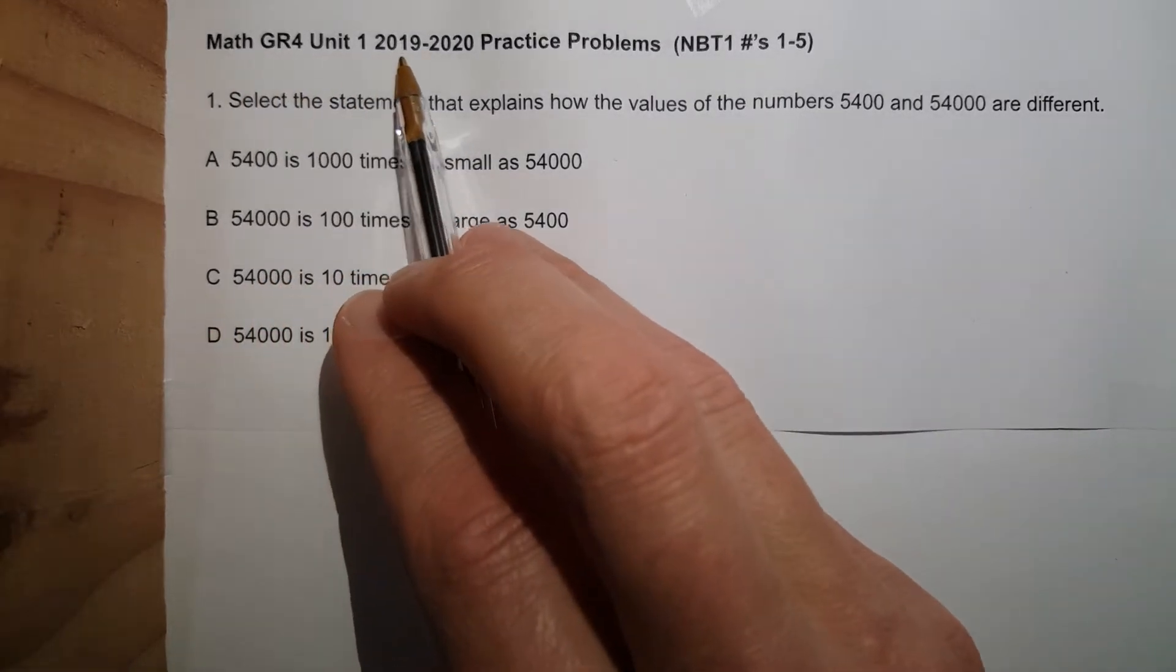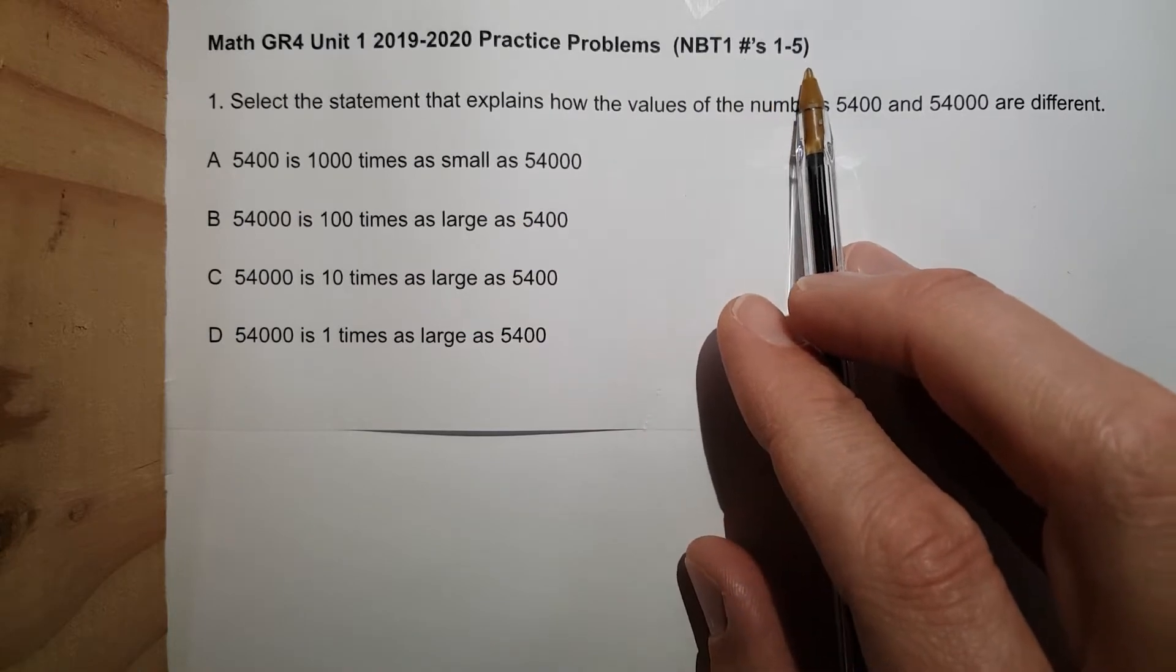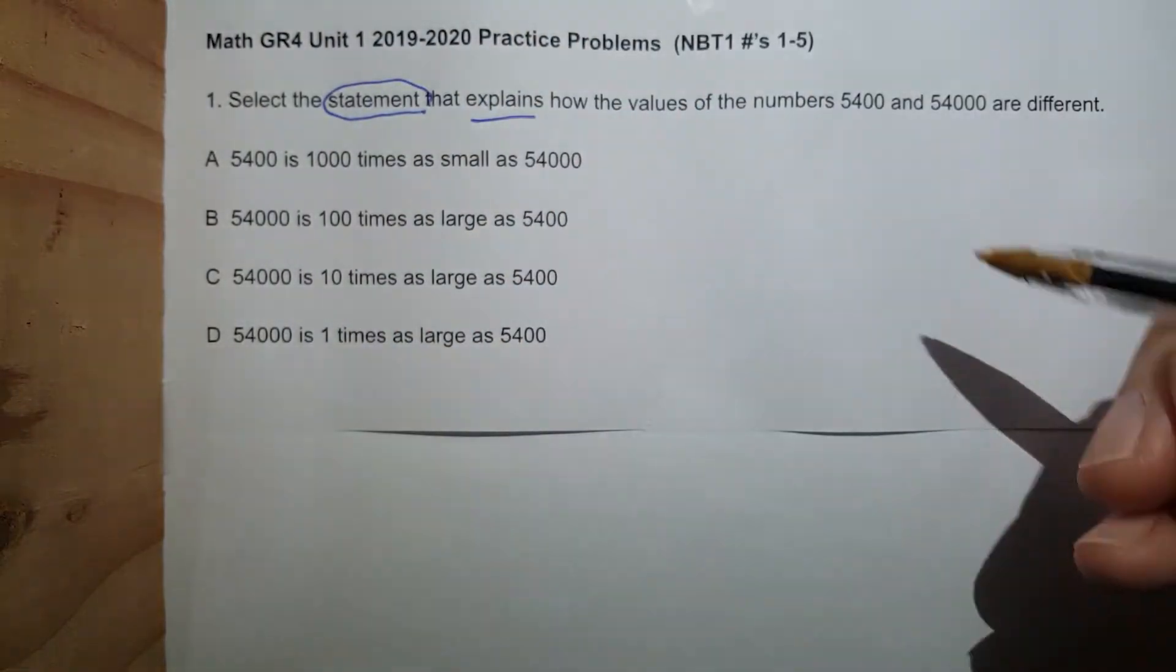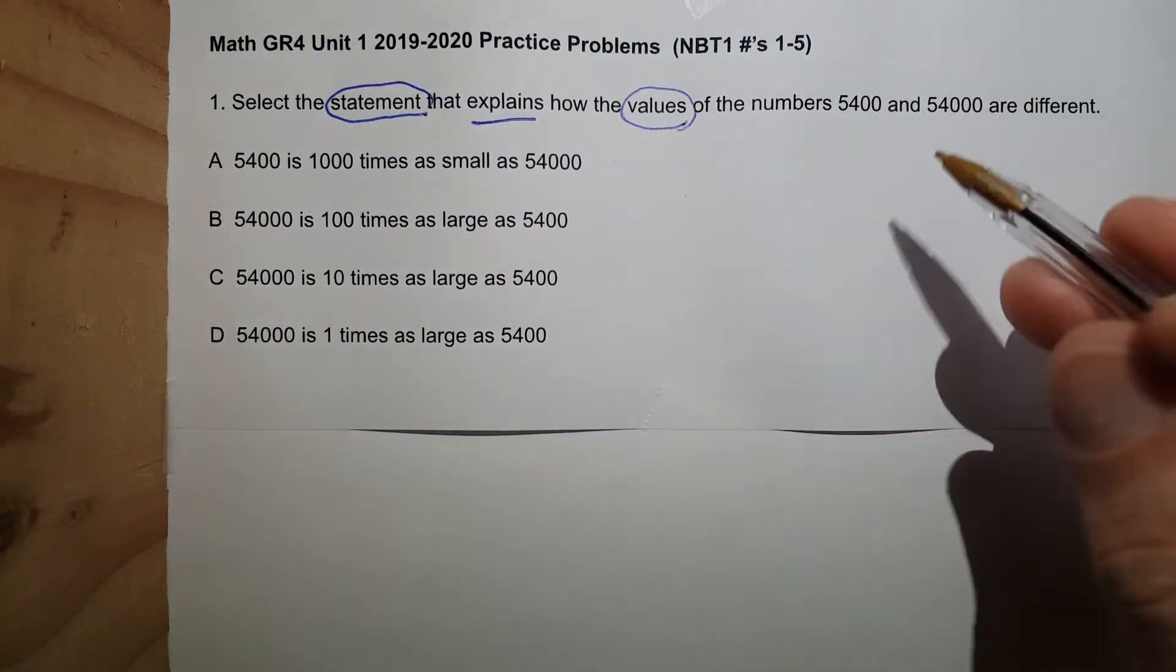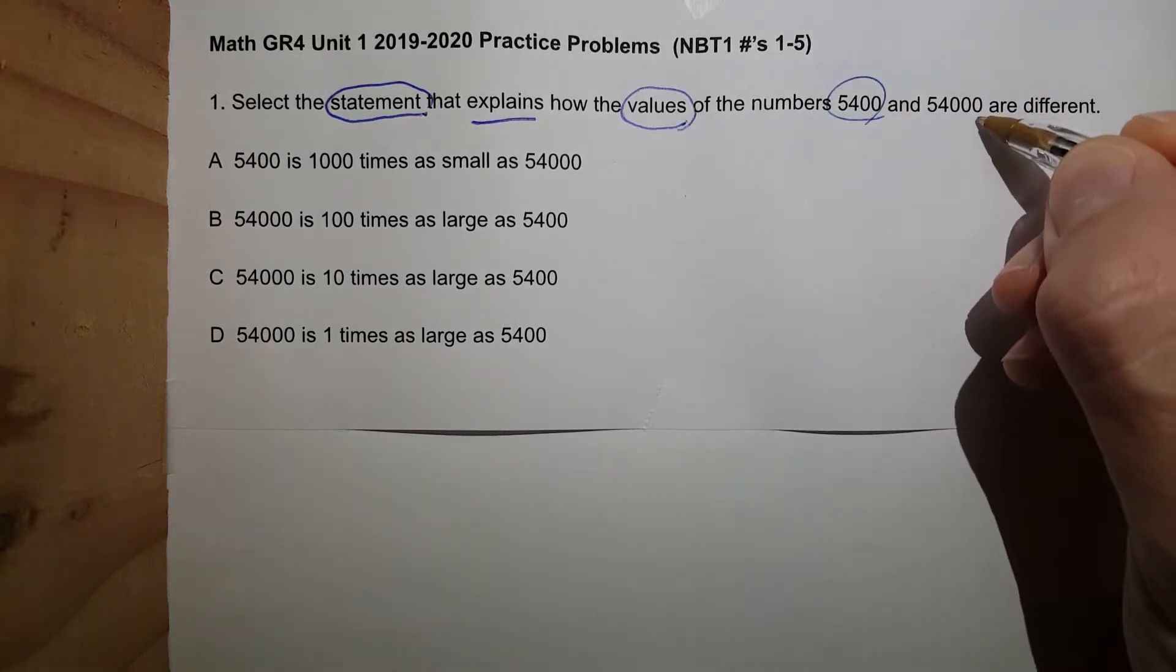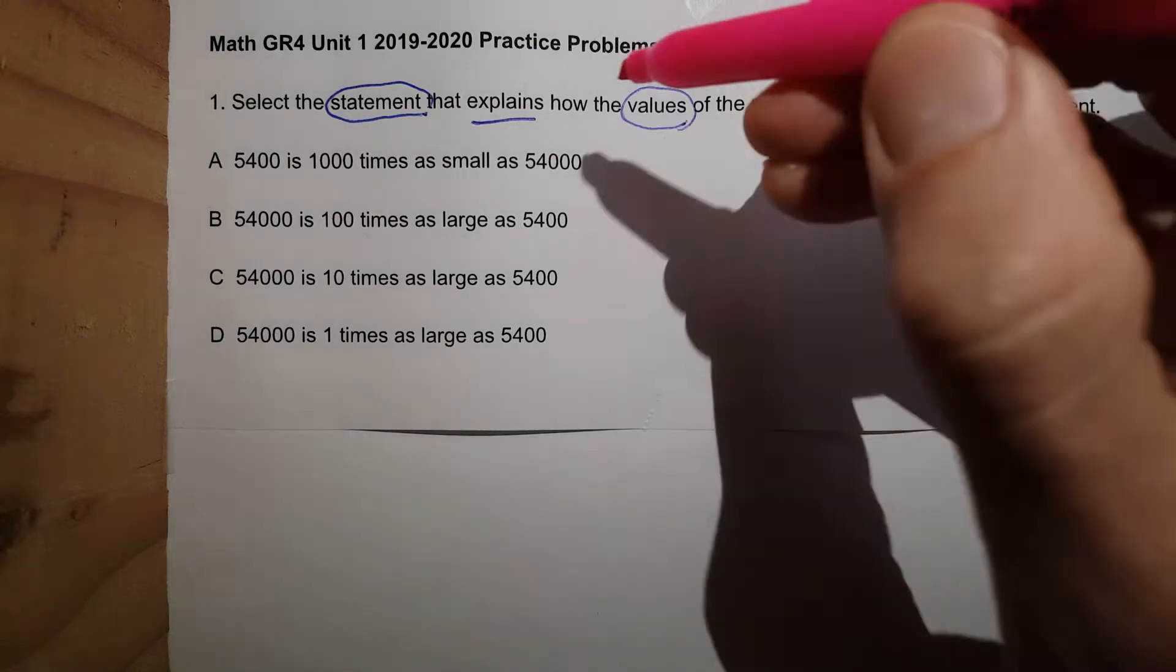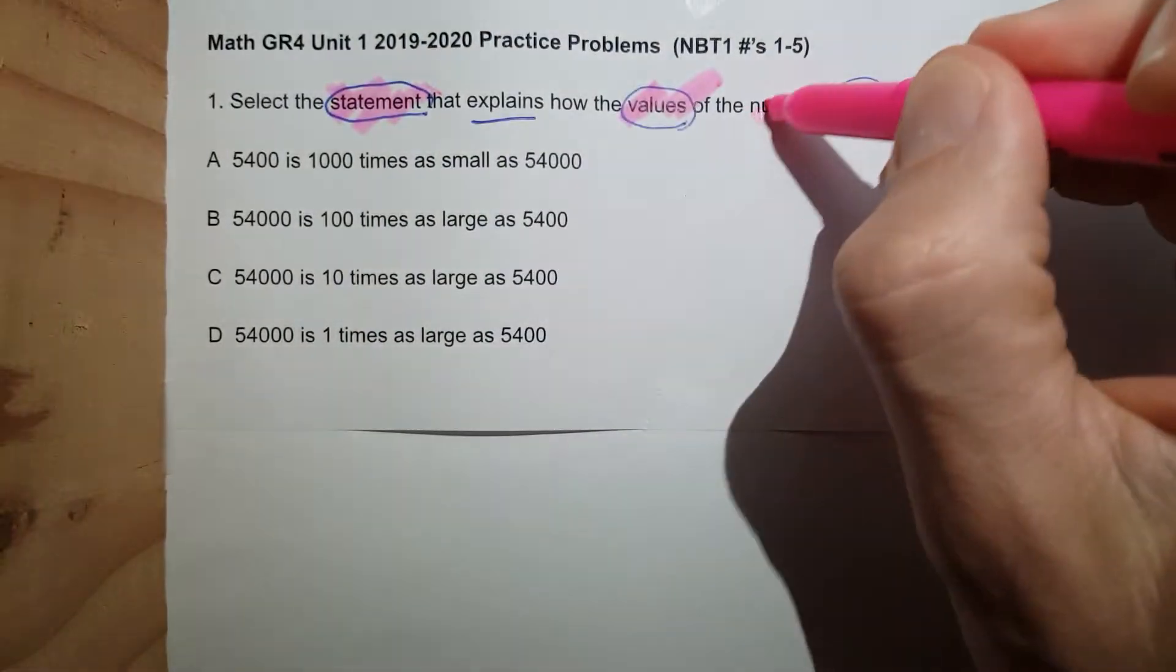Math Grade 4 Unit 1, 2019-2020 Practice Problems, NBT1 numbers 1 through 5. Select the statement that explains how the values, keyword values, of the numbers 5400 and 54000 are different. Important words: values, statement, numbers.